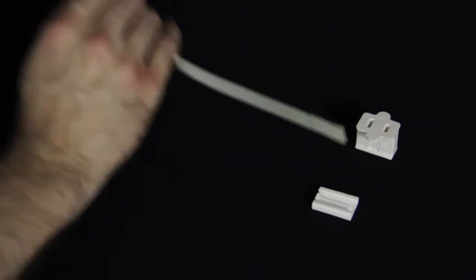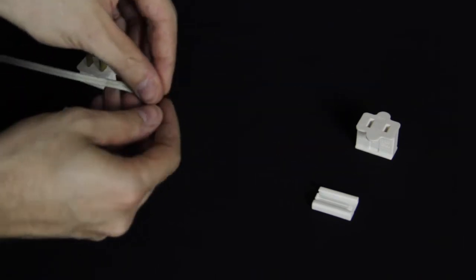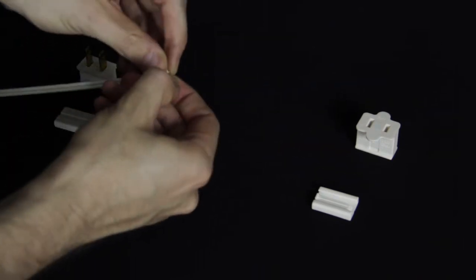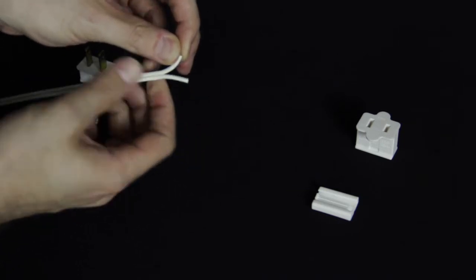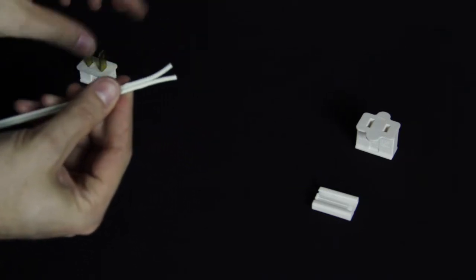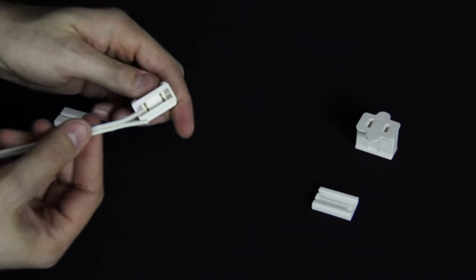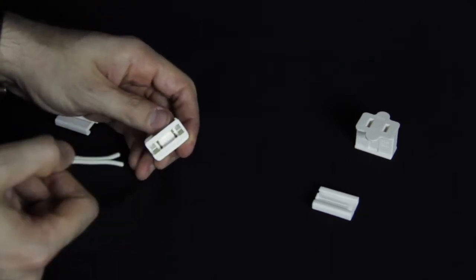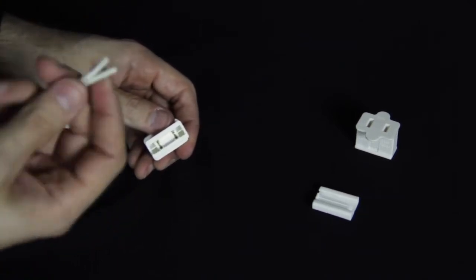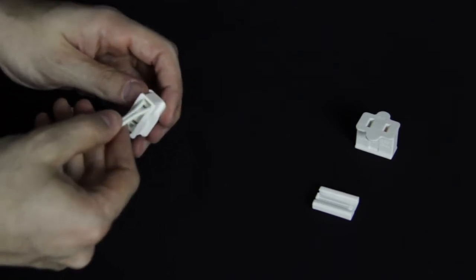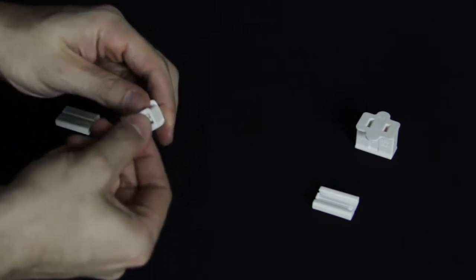So all you have to do is take your wire, kind of pull it apart like that. And then on each plug there is a little divider wall in there. You might be able to see that. So you take your wire, put it in each side of that little divider wall.